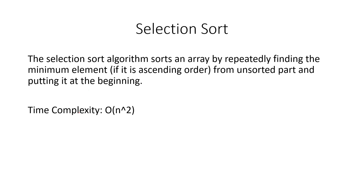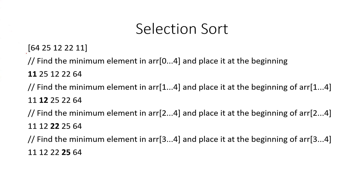Next is selection sort. Selection sort works by repeatedly finding the minimum element — if sorting in ascending order, we find the minimum element and place it at the beginning of the array. The time complexity is also O(n²).